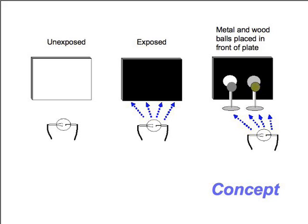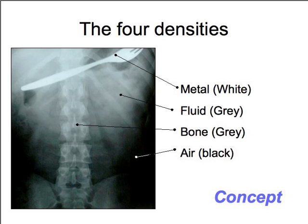On the plate, because the energy could not pass through the metal ball and reach the plate. However, the wood has a gray shadow because some of the energy was able to penetrate the less dense wood and hit the plate. So really, what the x-ray does is distinguish between items of different densities.